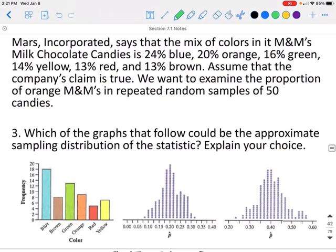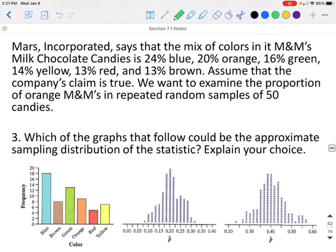Which of the following graphs could be used to approximate the sampling distribution of the statistic? Explain your choice. If we look at these different ones, we know that the proportion of orange in the entire population is 20%. Your p̂ should also be close to 20% at the middle.